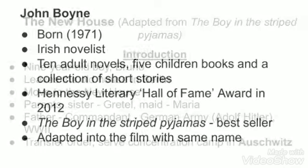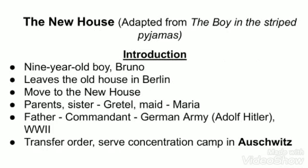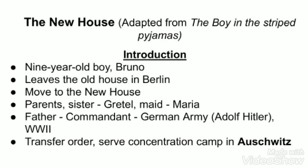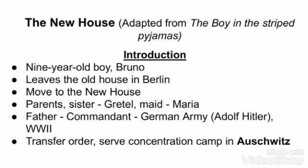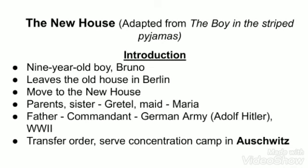The lesson The New House is one of the chapters adapted from the book The Boy in the Striped Pajamas. The lesson talks about a boy who is about 9 years old, named Bruno. The boy has to leave his house in Berlin and move to a new house along with his parents, his 12-year-old sister Gretel, and their housemate Maria.